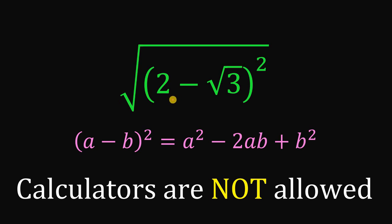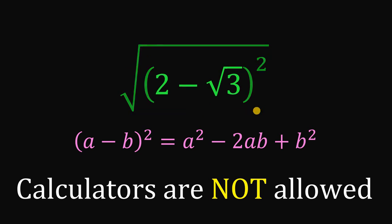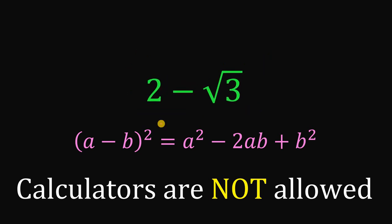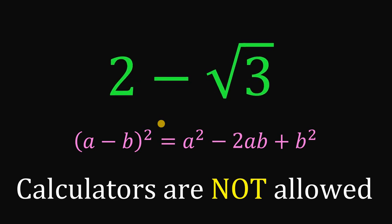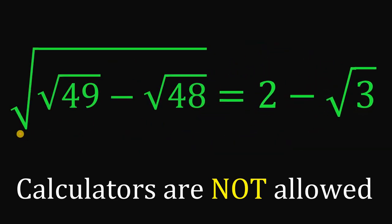Therefore, 2 squared minus 2 times 2 times square root of 3 plus square root of 3 squared can be written as (2 minus square root of 3) squared. So we have the square root of (2 minus square root of 3) squared. We can cancel the squared and square root. Note that 2 minus square root of 3 is greater than 0, since 2 is greater than square root of 3. Therefore, this expression simplifies to just 2 minus square root of 3 — and that is our answer.